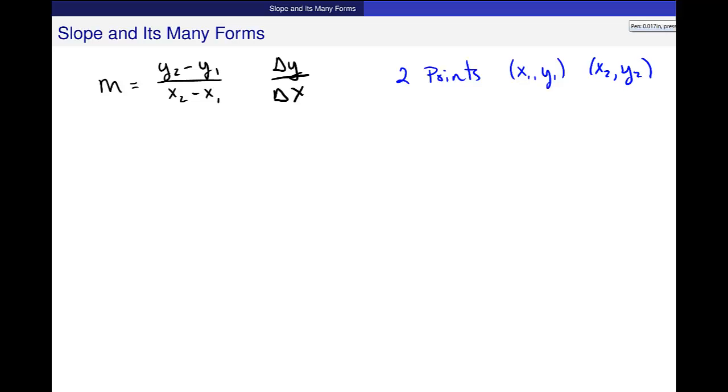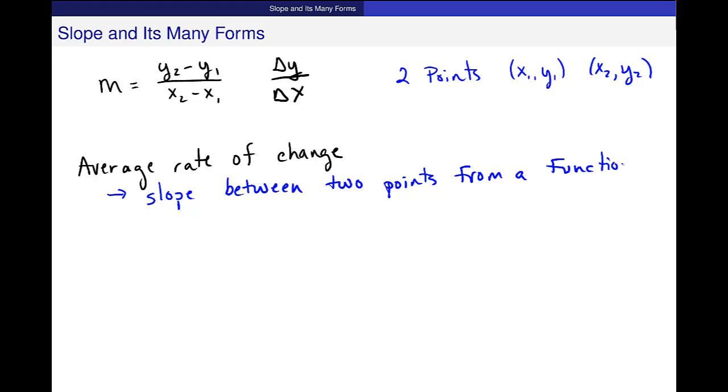So now another form that this slope takes, or another name that it takes, is called the average rate of change. We use this word when we're getting, for example, the slope between two points from a function or graph.